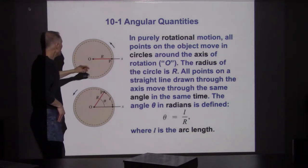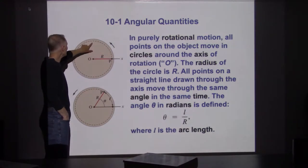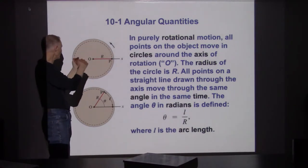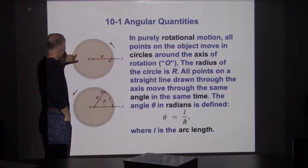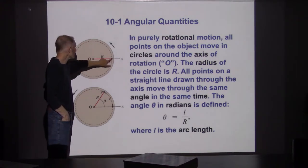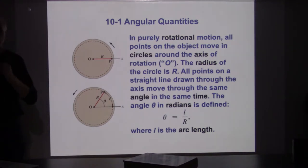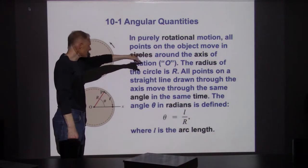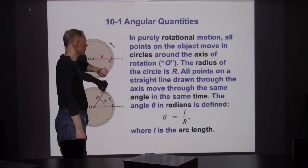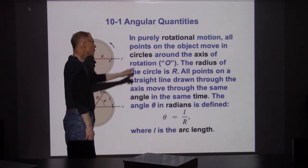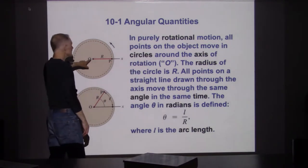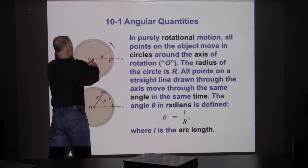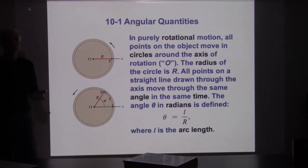We're going to try and emphasize that as we go along, picking out different axes of rotation. Just to get started, we have a round object with an axis of rotation right at the center of that circle. They've picked a point P and say: if this object rotates as a rigid object, point P is going to map out a circle. By the time it's gone all the way around, it will have completed one complete cycle of circular motion — one complete cycle of rotational motion also. So the axis is always going to be important.